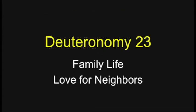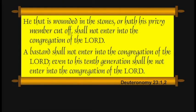Let's go to Deuteronomy chapter 23 — it's going to talk a lot about family life and various ways to demonstrate love for your neighbors. Verse 1: 'He that is wounded in the stones, or hath his privy member cut off, shall not enter into the congregation of the Lord.' In other words, this excludes eunuchs. You'll find other passages, like Isaiah 56, where eunuchs will be welcomed.